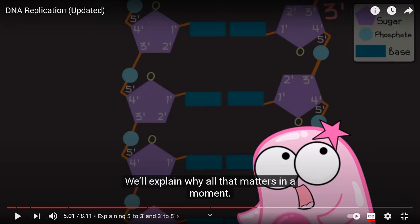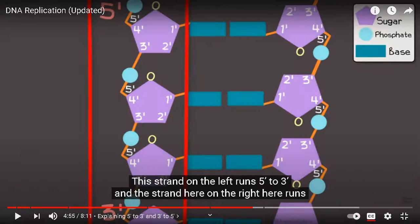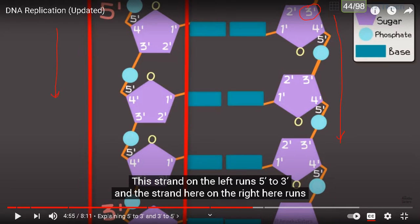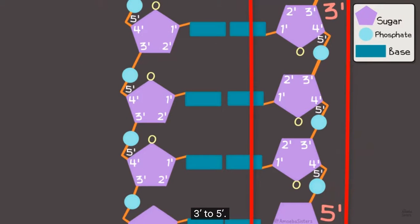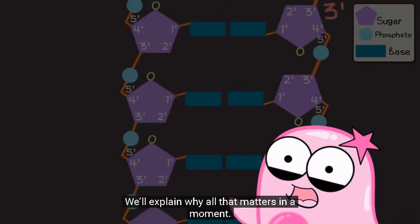Focus on this again: the 5' represents the carbon number on this side, so this strand goes in the direction from 5' to 3'. The other strand, depending on the 3' end, goes from 3' to 5'. This strand on the left runs 5' to 3', and the strand on the right runs 3' to 5'.